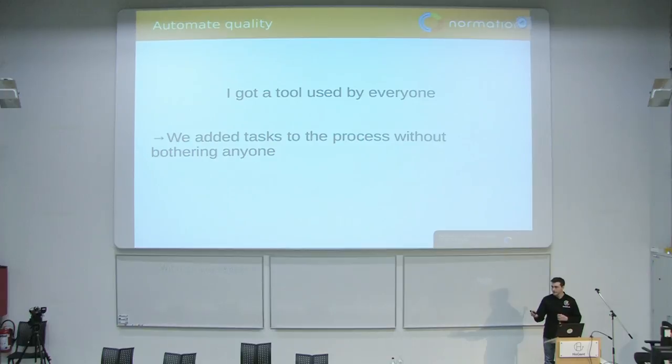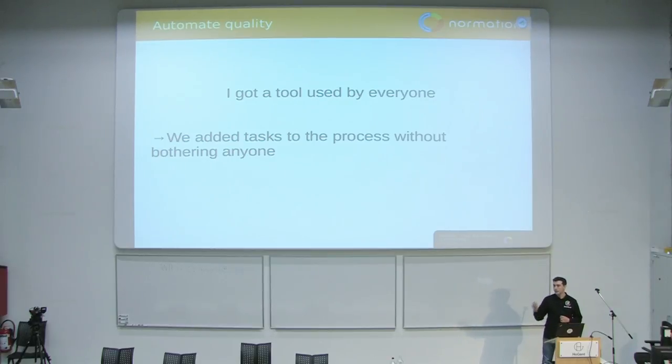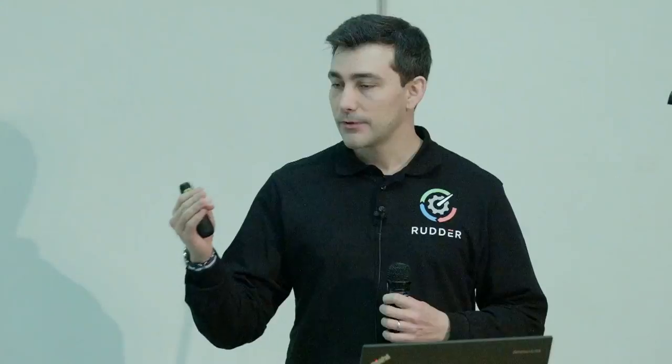So what did I get? I got a tool used by everyone at Normation, and they use it voluntarily — which means it's a good tool. We could even add a few tasks to the process without bothering anyone. For example, we added a new link to every pull request to link back to the ticket that led to it, which makes life easier for the reviewer — and the person making the commit doesn't have to change anything.